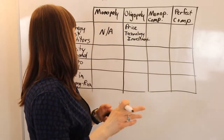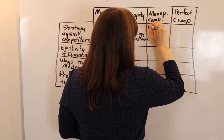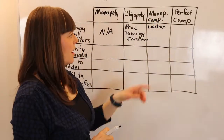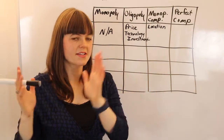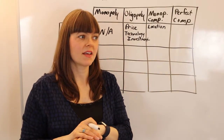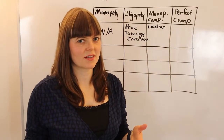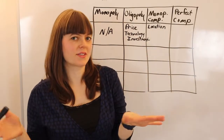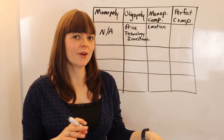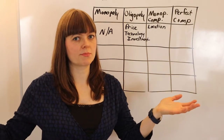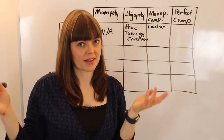For monopolistic competition, one strategic dimension is location — meaning where you place yourself in the product space where people have a spectrum of preferences. The classic example is restaurants: some people prefer spicier food, others prefer sweeter food, and you can imagine a spectrum along which people locate their optimal food preference.